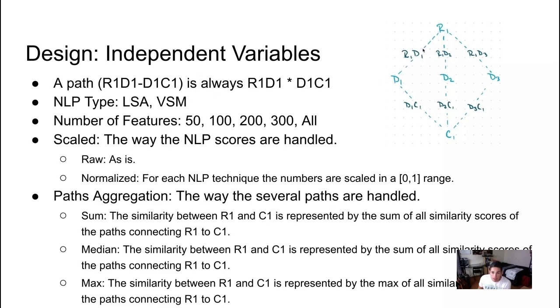What we're labeling here, the score would be R1 D1 as given by the conversion, and then similarly D1 C1. So now you have these two scores but what we really want is one score comparing requirement one to class one. The question begs, how do we take these scores and combine them into one? That goes into a little bit of the path aggregation. We can sum them, we can take the median, we can take the maximum.